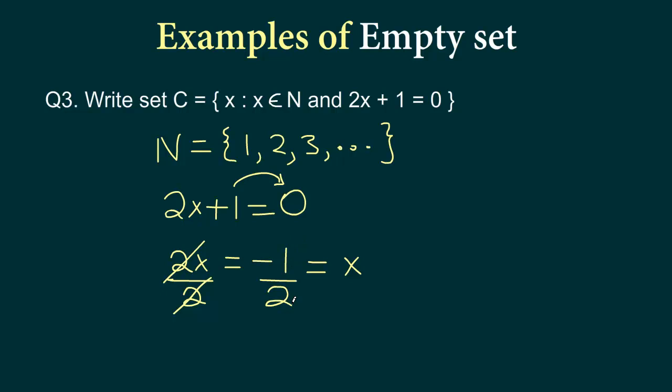So x is minus 1 by 2, but this is not a natural number. Natural numbers are these numbers. So we say that set C is a null set, void set, empty set, or it does not contain any elements.